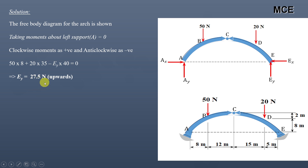From this you will get the value of Ey equal to 27.5 newtons. Since the value of Ey is positive, it means our assumed direction of the force Ey is correct — so it acts in the upward direction.